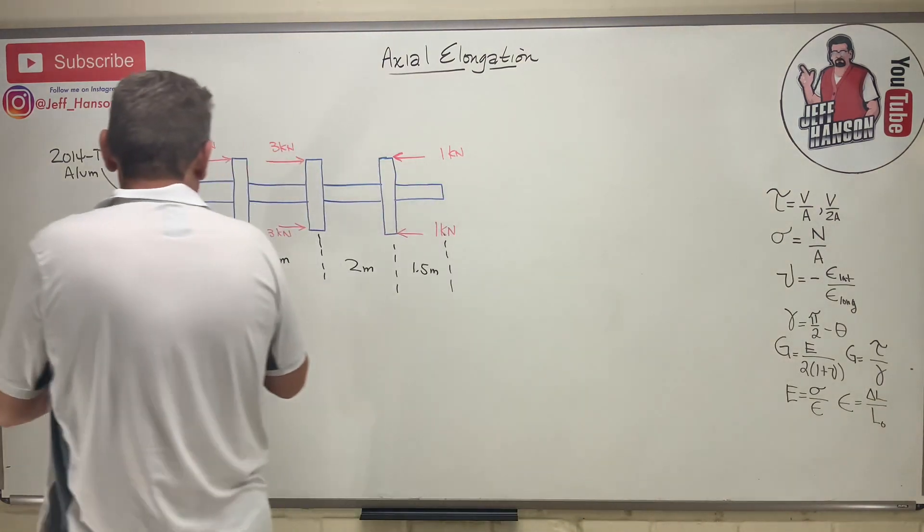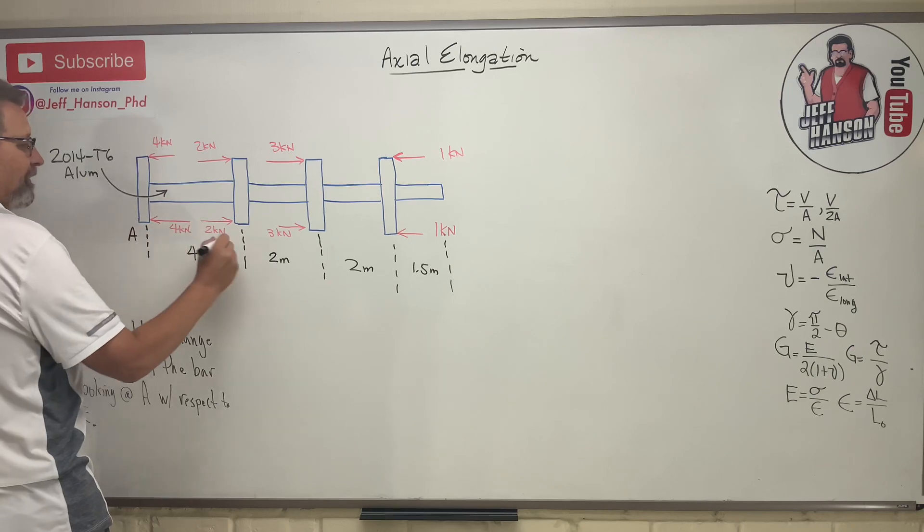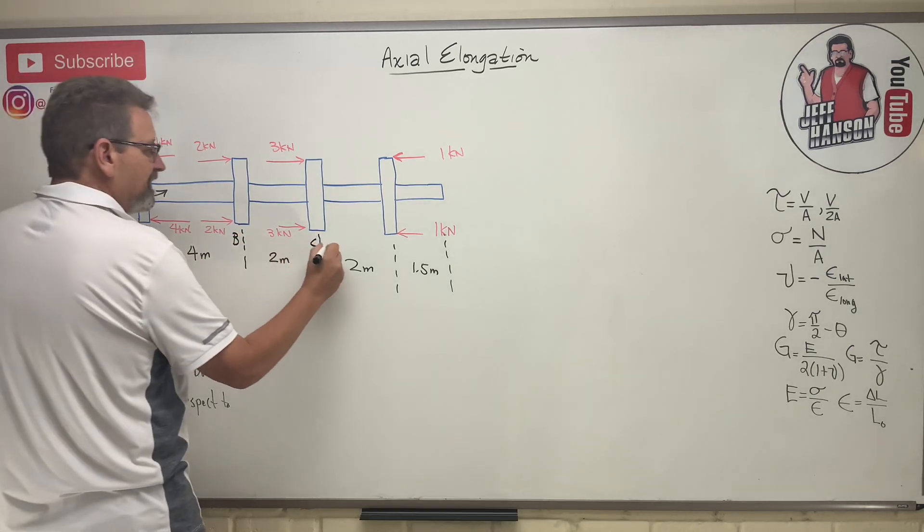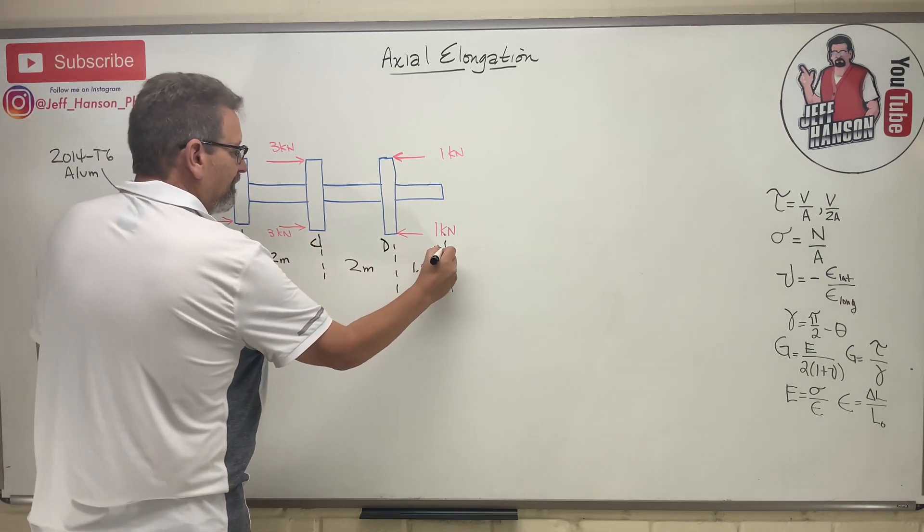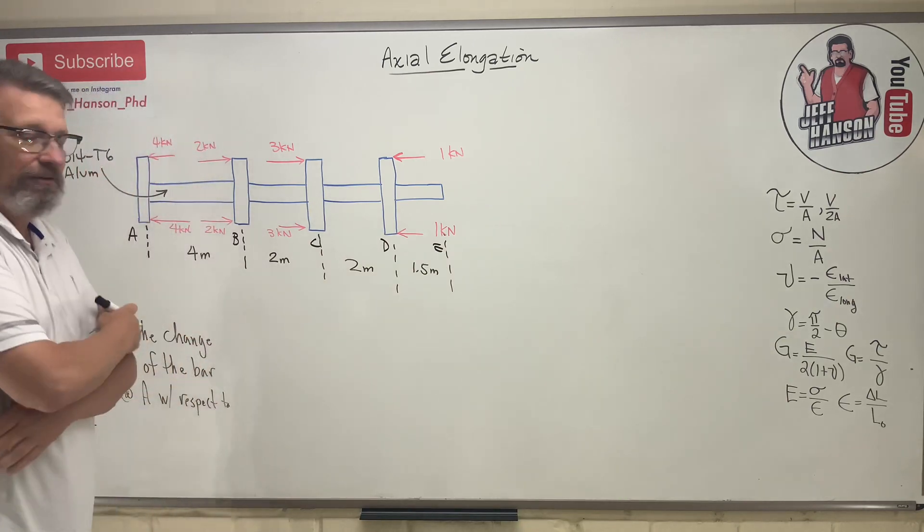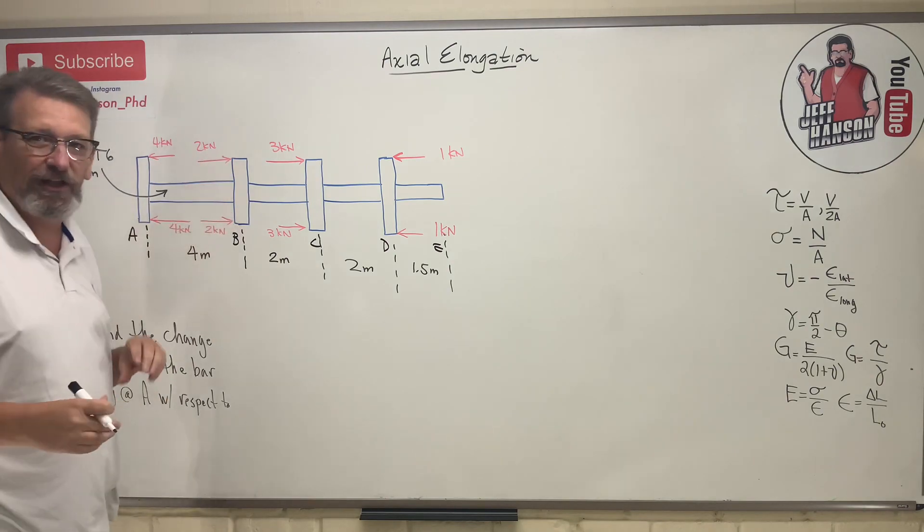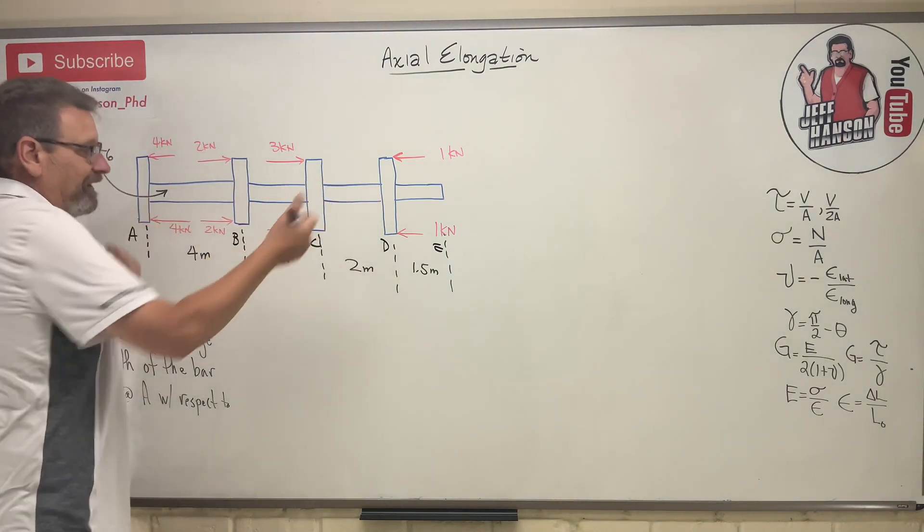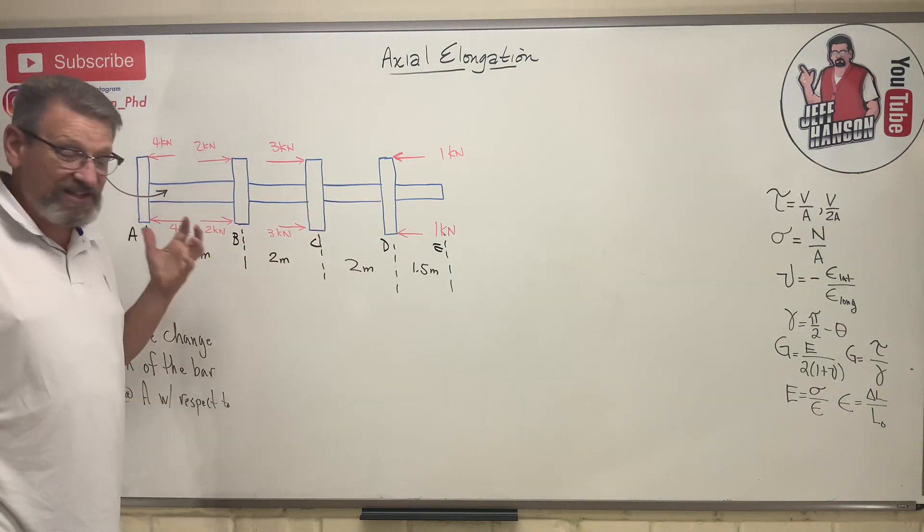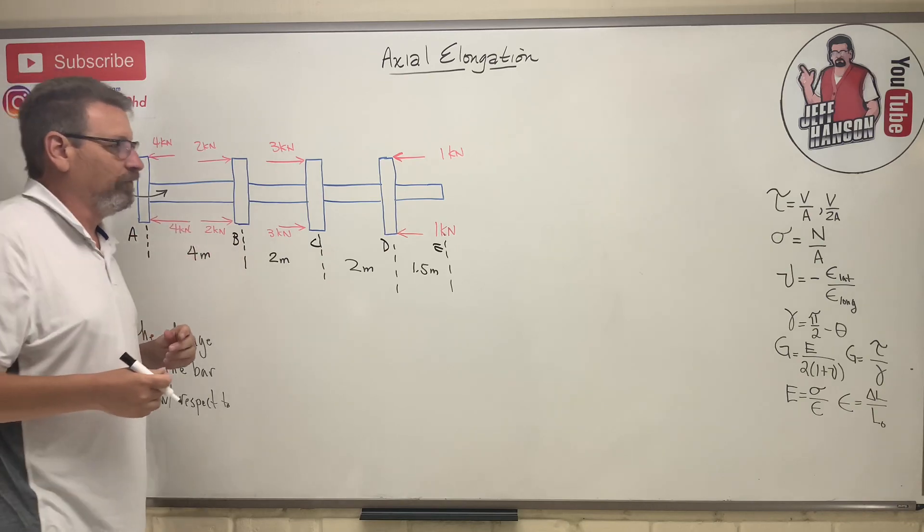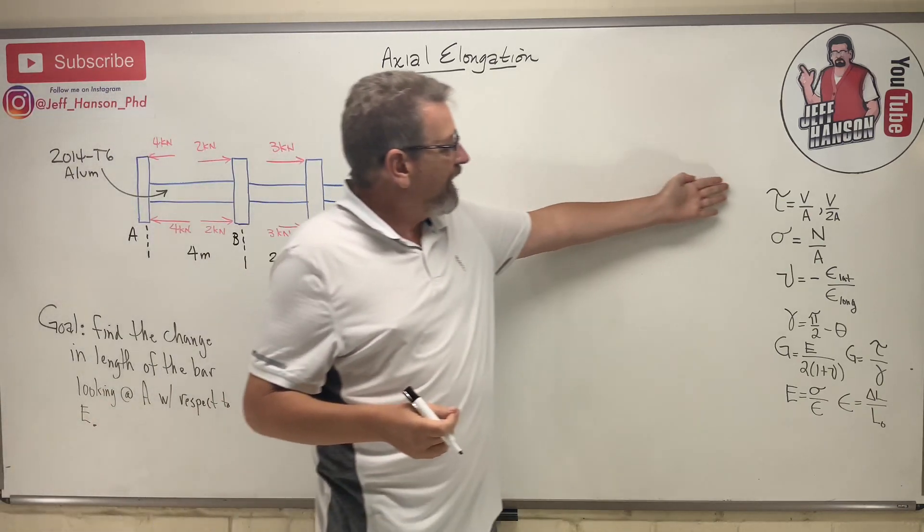So from one end to the other, here's A, here's B, C, D, and here's E. With these loads on them, they've got some kind of flanges that the loads are applied to. How long is the bar after you apply these loads?